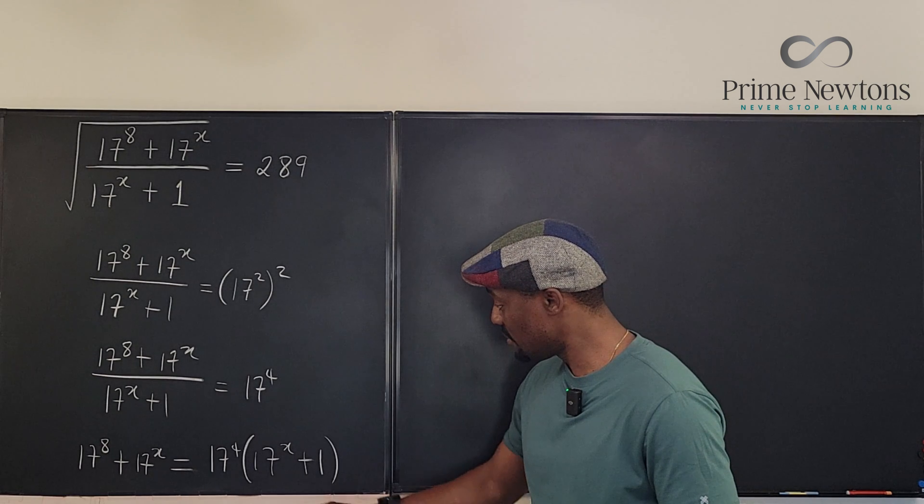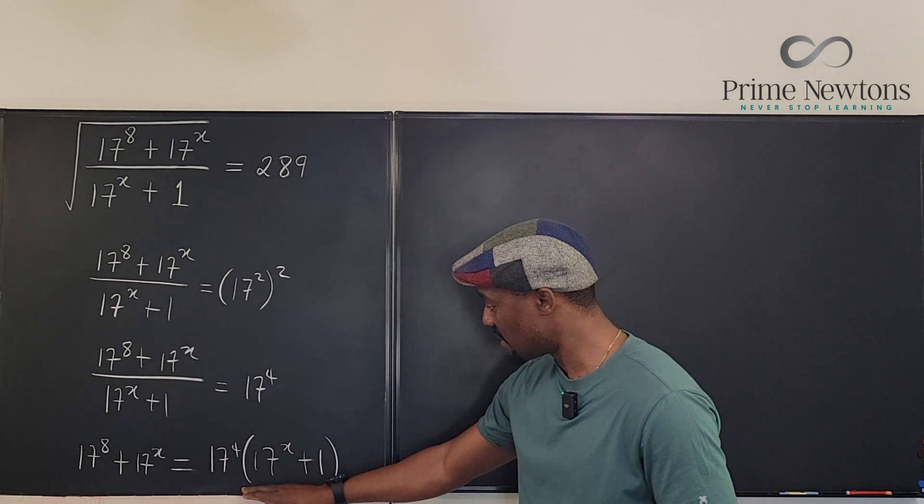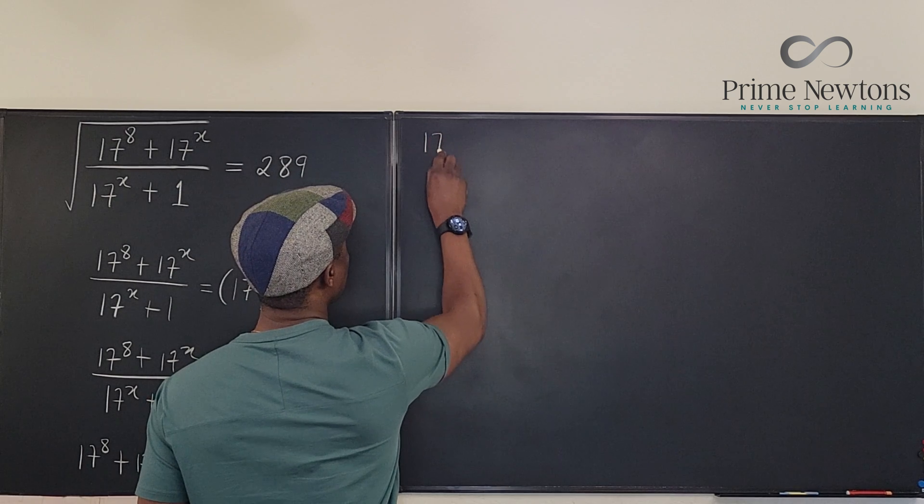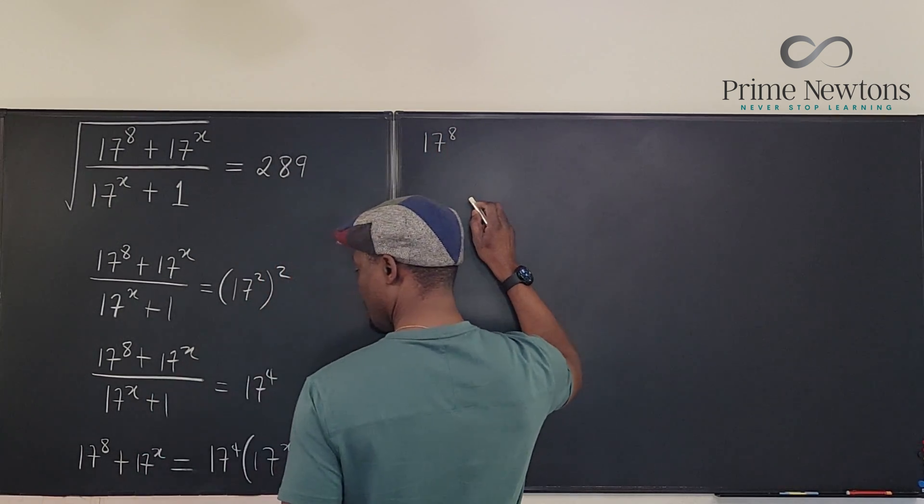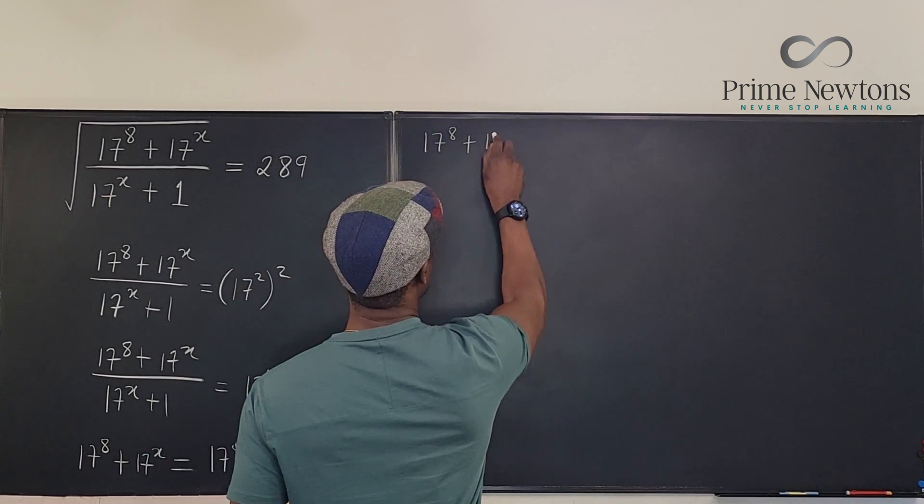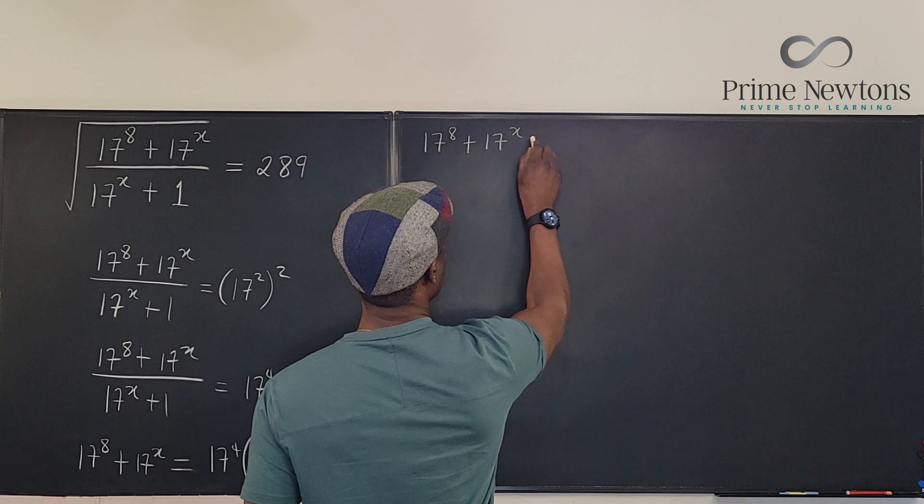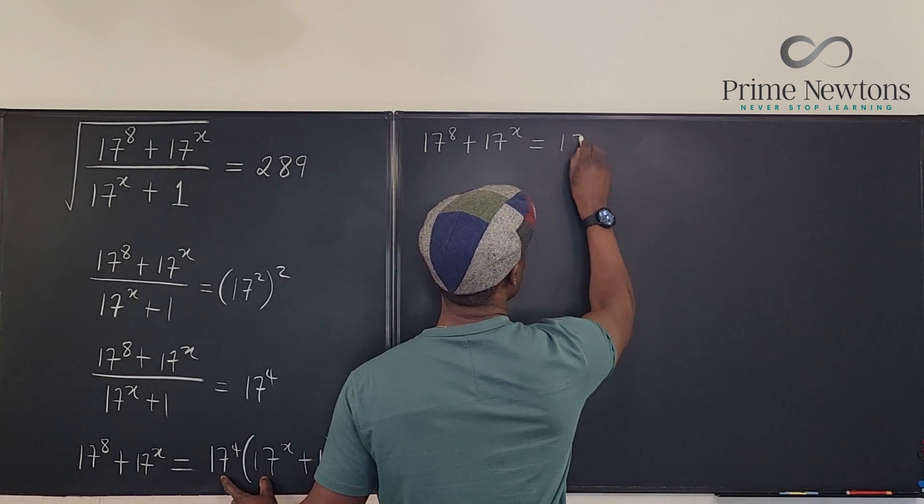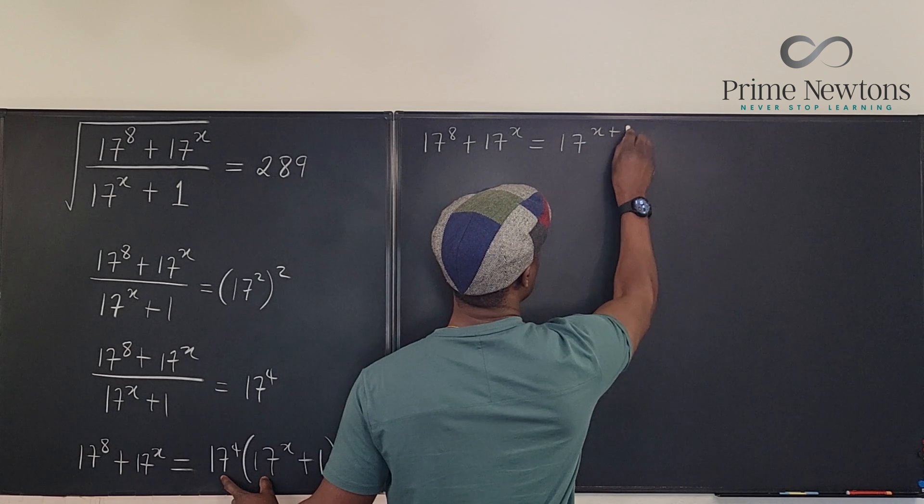In order to see what to do, I recommend distributing this. So we're going to have 17 to the 8th plus 17 to the X. If I distribute this, it's going to give me 17 to the X plus 4.